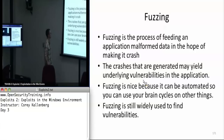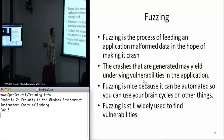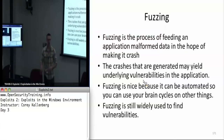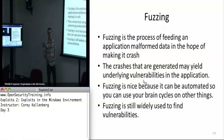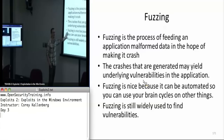Like I mentioned before in Exploits 1, fuzzing is basically the process of feeding an application malformed data. You do this at a very fast rate, and it's nice because you can program a computer to do it. It's not something you have to waste your own brain cycles on. That's the real advantage of fuzzing — you can program a computer to just keep hammering an application with malformed data.